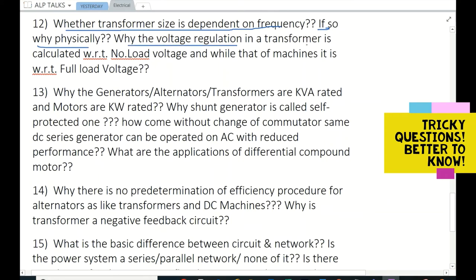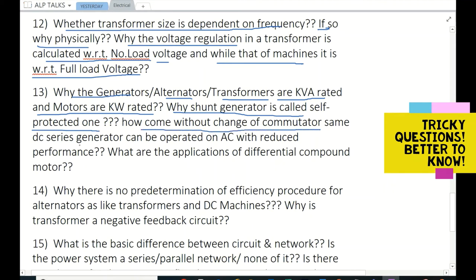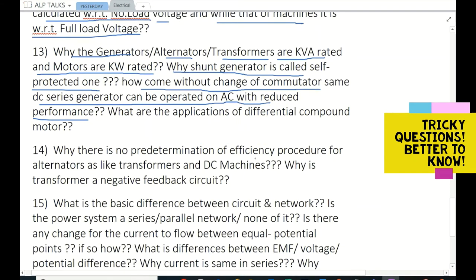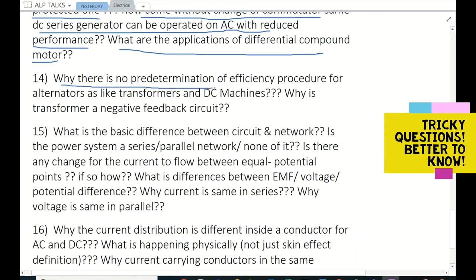Why is the voltage regulation in a transformer calculated with respect to no-load voltage while in machines it is with respect to full-load voltage? Why are generators, alternators, transformers kVA rated and motors kilowatt rated? Why is shunt generator called the self-protected one? How come without the change of commutator same DC generator can be operated as AC with reduced performance? What are the applications of differential compound motor? Why is there no freedom predetermination of efficiency procedure for alternators like transformers and DC machines?